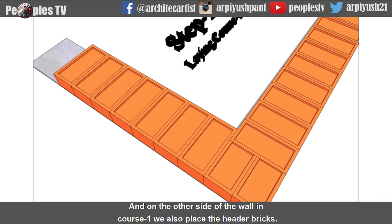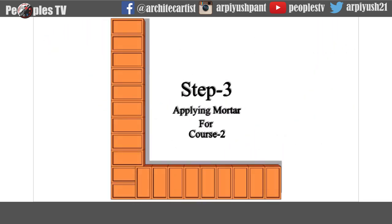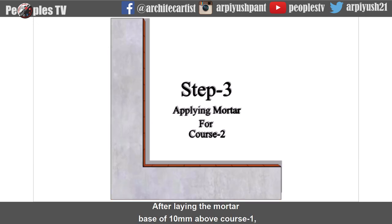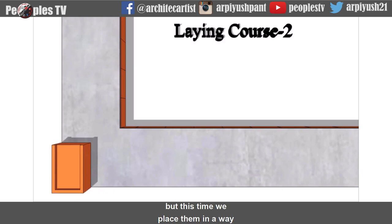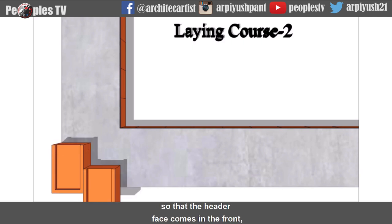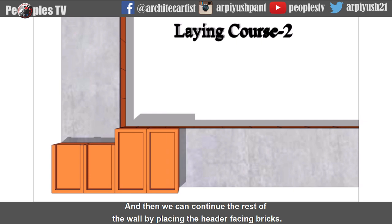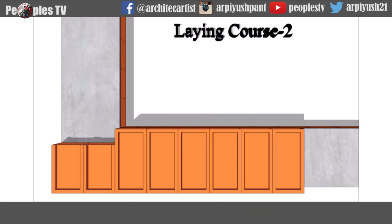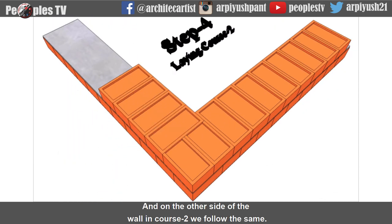On the other side of the wall in course 1, we also place the header bricks. Now we start course 2. After laying the mortar base of 10mm above course 1, we start with the same 3/4 bat. But this time, we place them so that the header face comes to the front, which is just opposite to course 1. We then continue the rest of the wall by placing header-facing bricks, and on the other side of the wall in course 2, we follow the same procedure.